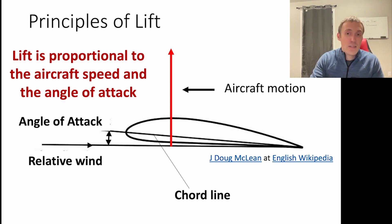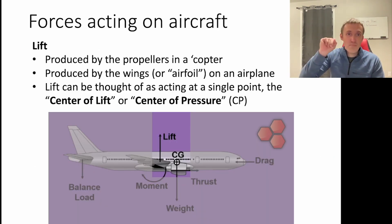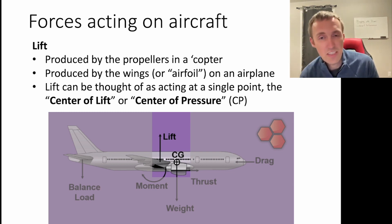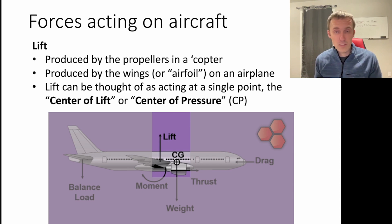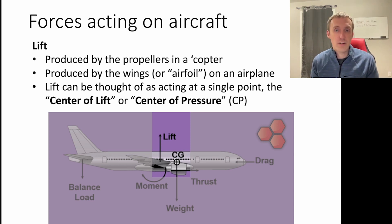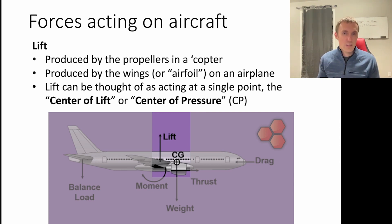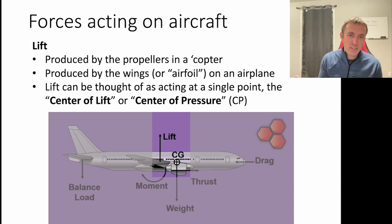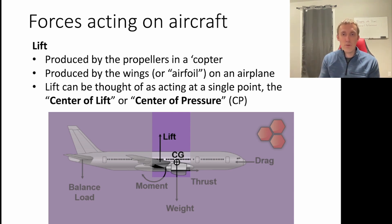Lift is proportional to both aircraft speed and angle of attack, so a higher angle of attack means more lift. In a quadcopter or octocopter, lift is produced by the propellers, while in an airplane it's produced by the wings or airfoil. We can think about lift as acting at a single point, which we call the center of lift or center of pressure — CP. That means all the lift acting over the airplane can be conceived of as acting at a single point, lifting the aircraft up at that point.